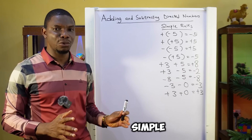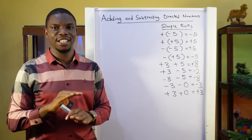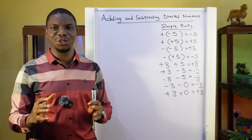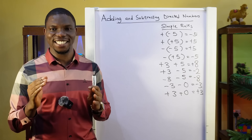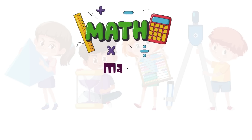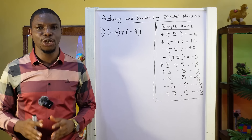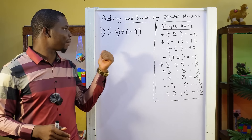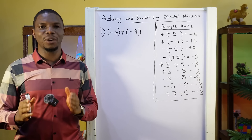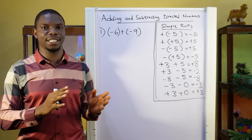So with these simple rules, there will be no addition or subtraction of directed numbers that will be too difficult for you to do. The next thing we are going to do is move on to some practice questions. Question 1: minus 6 plus minus 9. When I bring up an equation, the first thing you need to do is attempt the equation before watching my explanation.